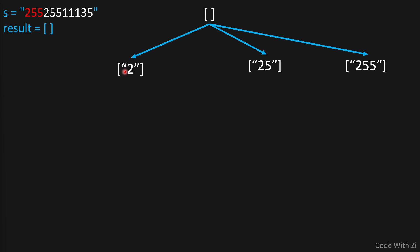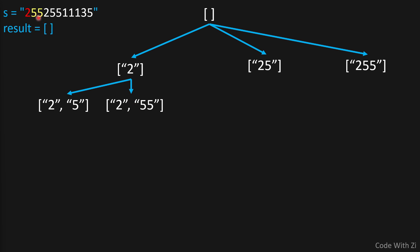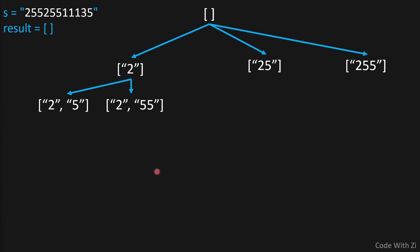Each part has at most three possible paths. Taking this path where the first part is 2, we then explore the second part: it could be 5, or 55. We can't have 552 because it's larger than 255, so we ignore that. Similarly, if the first part is 25, the second part could be 5, 52, but not 525. We repeat this pattern for all parts.